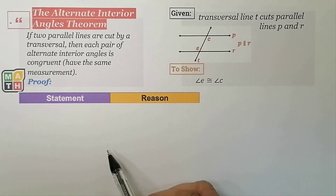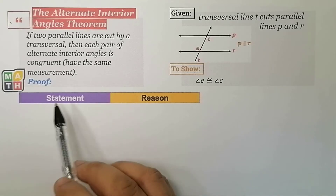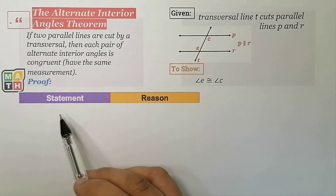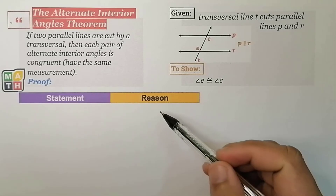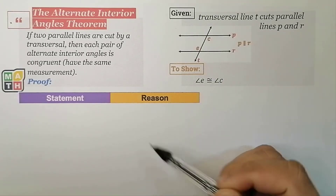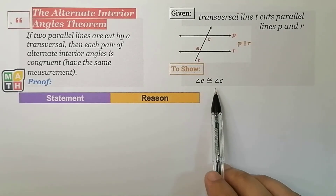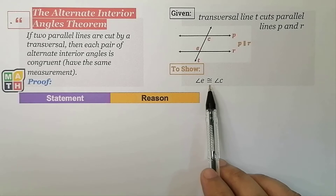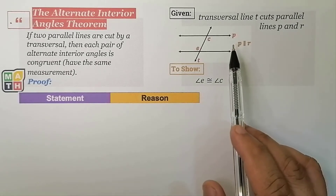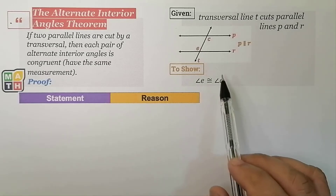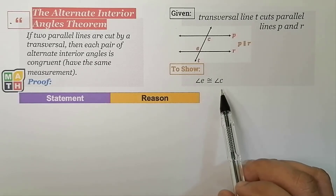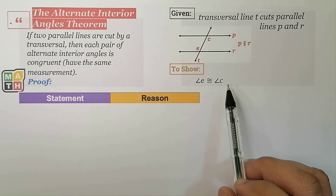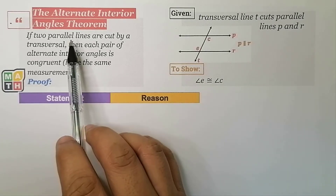For this theorem, let us use the two-column proof as we place here statements and corresponding reasons as we proceed to showing that the Alternate Interior Angles formed in this given figure are congruent. If we can show that Angle E is congruent to Angle C, then we have proven this theorem.